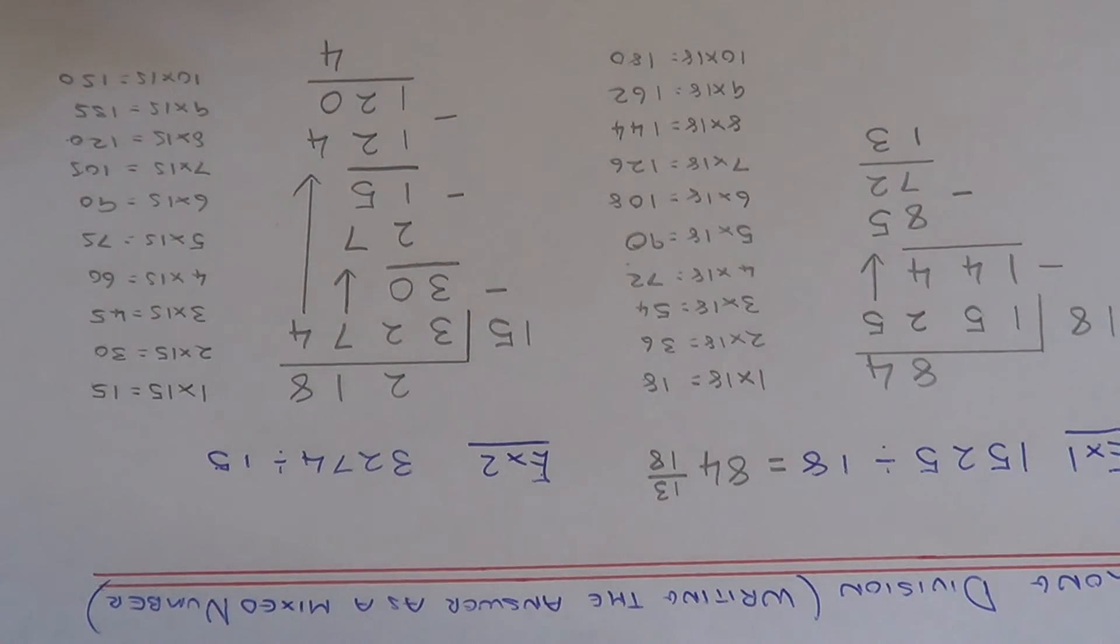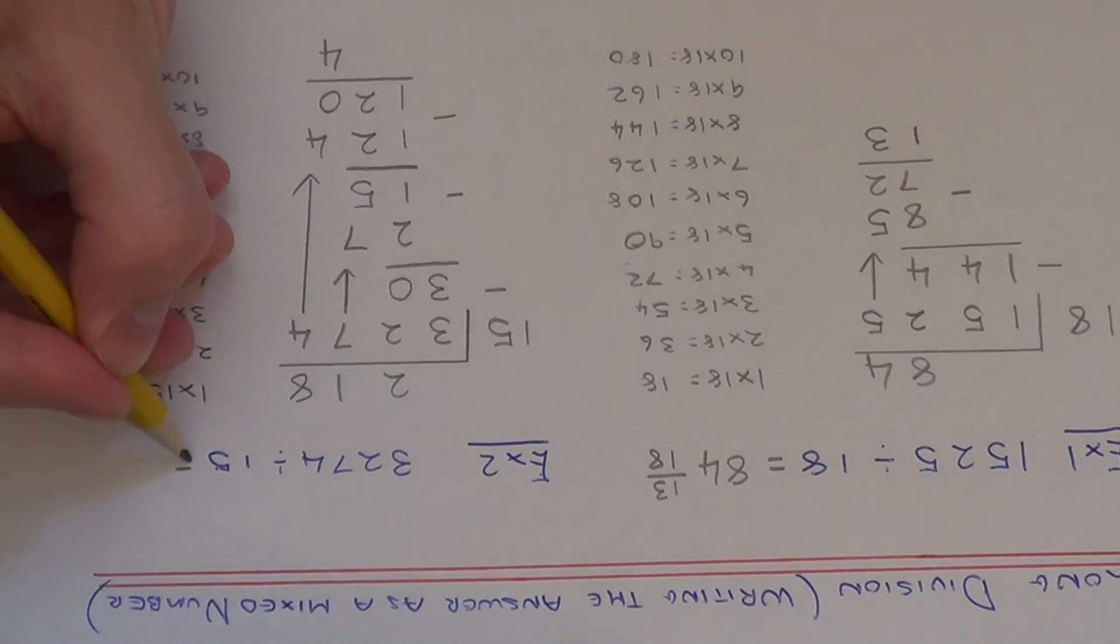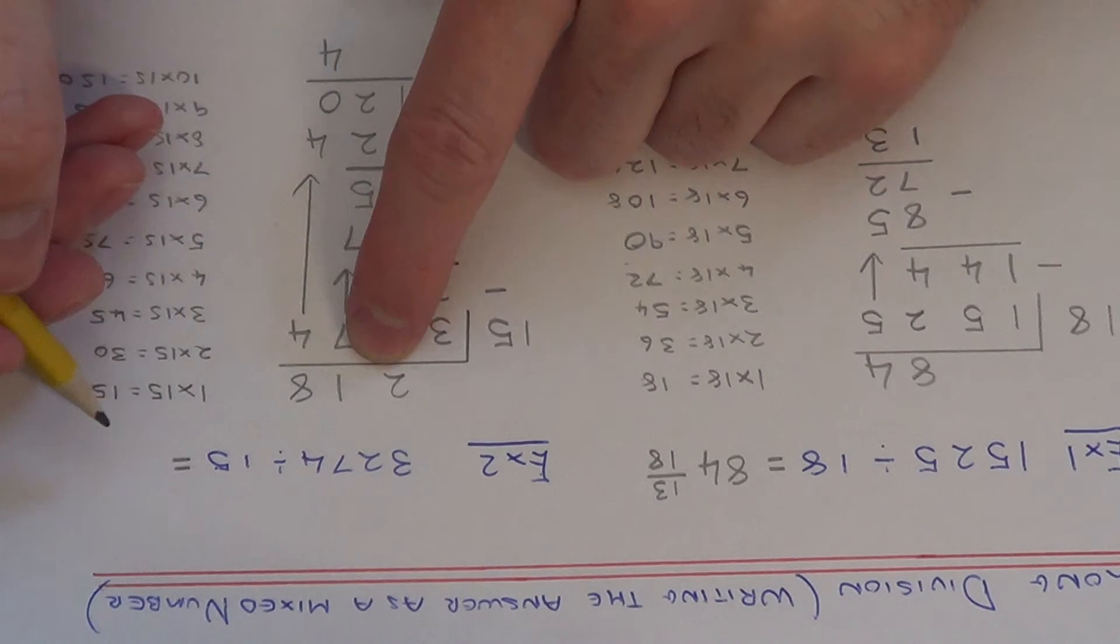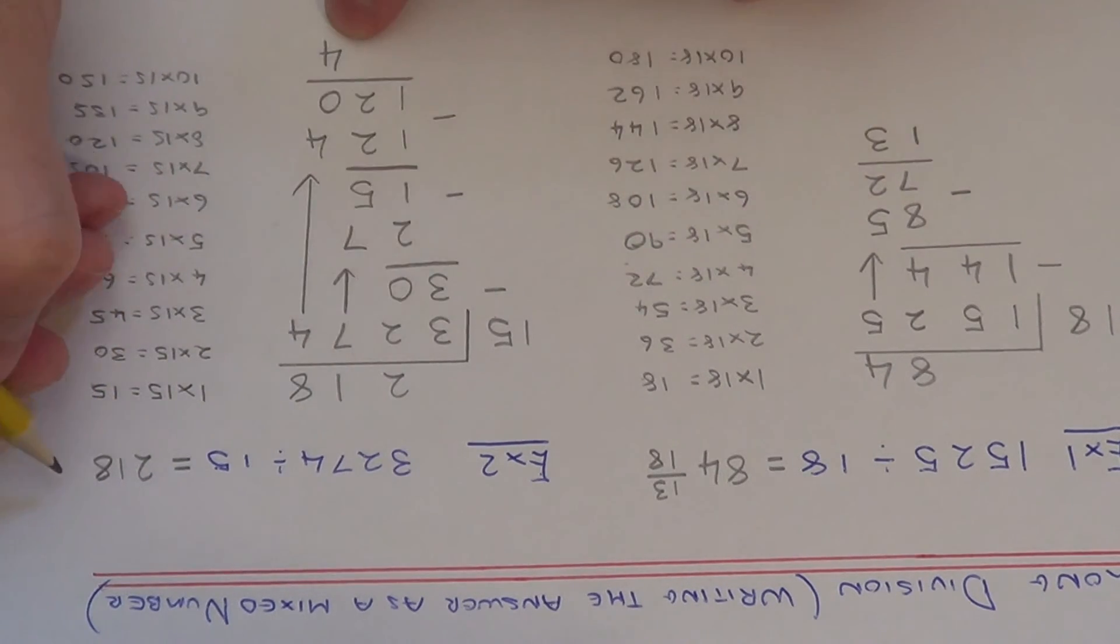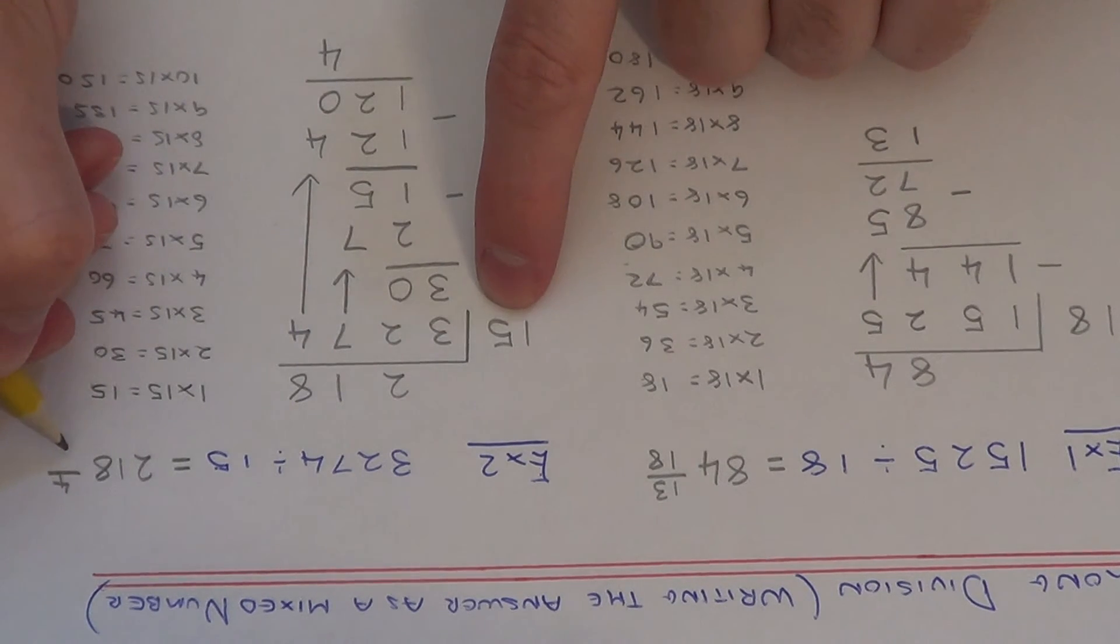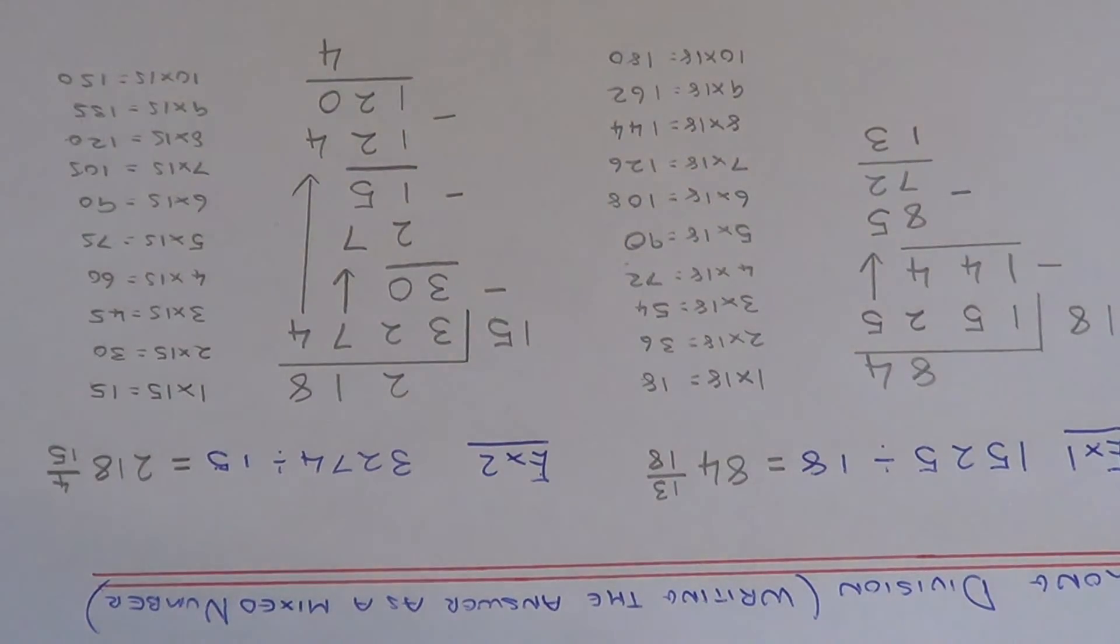This is our remainder. We just need to write the answer down as a mixed number. So it went 218 times. The remainder 4 you put on the numerator, and on the denominator you put the number that you were dividing by, which is the 15. So the final answer is 219 and 4 fifteenths. Thanks for watching.